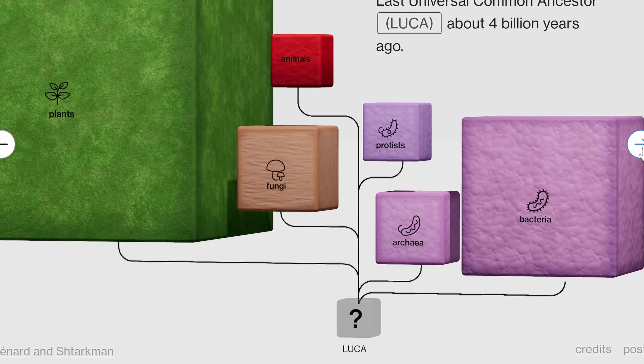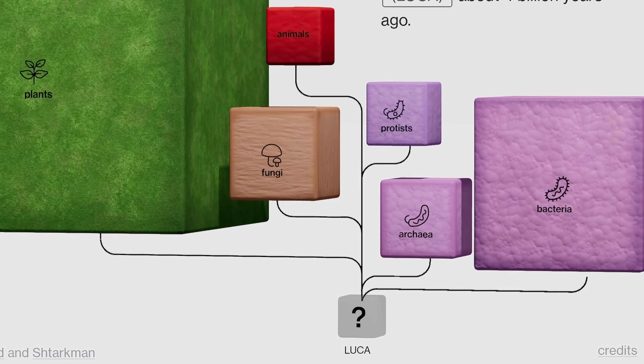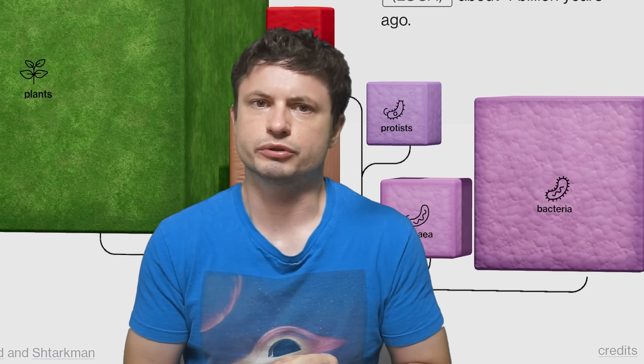All of this, as we know today, came from LUCA — the last universal common ancestor. Even though here it is presented as something that existed 4 billion years ago, a much more recent study established that LUCA most likely existed 4.2 billion years ago — basically when the Earth was only 300 million years old.